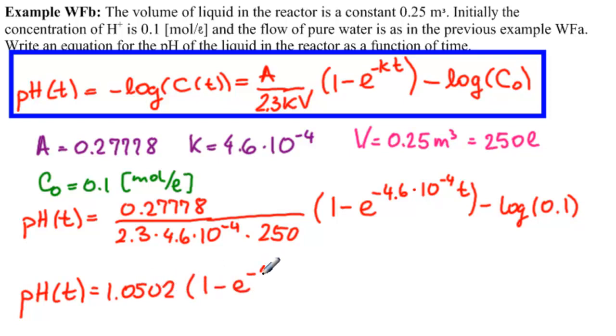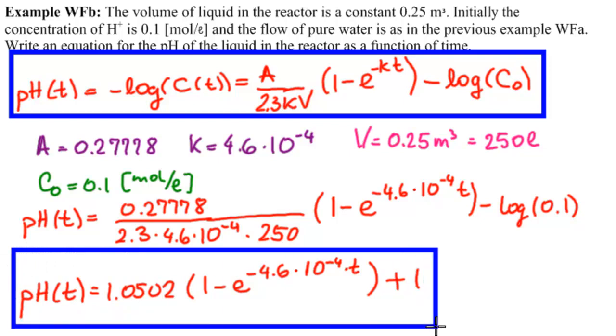1 minus E to the minus 4.6 times 10 to the minus 4th T minus, this is 1.0502, so that's 10 to the minus 1. You can easily look it up. So that's minus 1, so this is plus 1. So this is our final function.